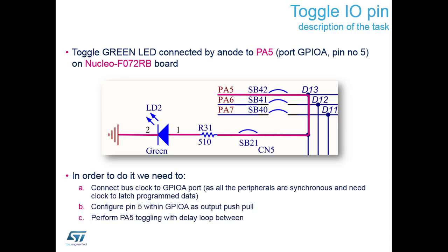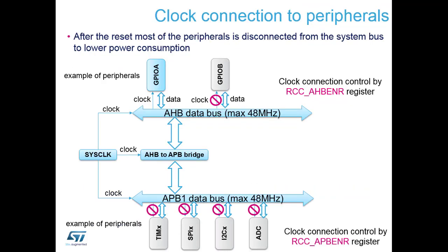To configure and toggle GPIO Port A pin 5, we need to: connect a clock so we can load information into the registers (peripherals are synchronous and require a clock to latch data), configure PA5 as output push-pull since the default reset state is floating input, and then toggle PA5 by changing the data register between high and low so we can see the LED switching on and off.